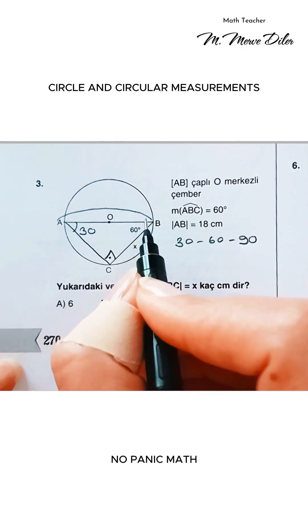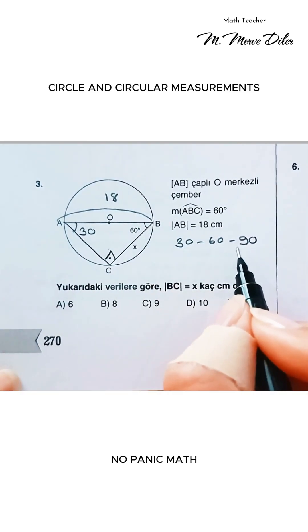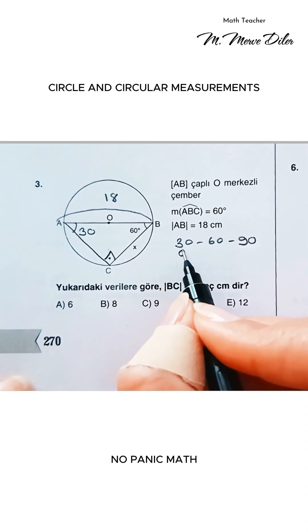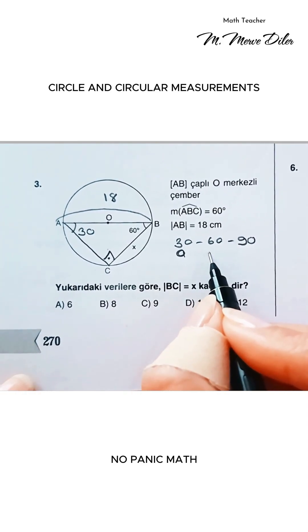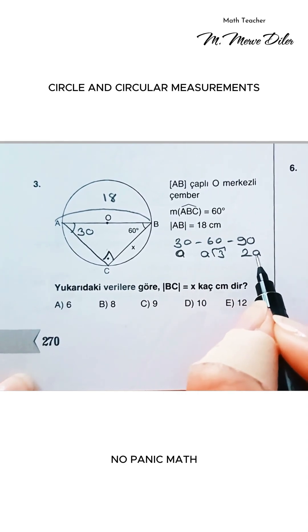Now, they gave us the length of AB as 18 centimeters. So for the side opposite 90, let me write it like this. The side opposite 30 is A. The side opposite 60 is A times square root of 3. The side opposite 90 is 2A.